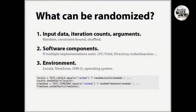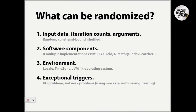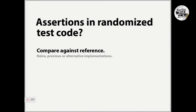Lastly, the environment — this is the most obvious thing to randomize. Randomize locale, randomize the time zone, the JVM itself — sometimes the JVM is the source of a bug that you don't know of. The operating system — if you're running on Windows, it will behave differently from other operating systems anywhere in the world. You can also add exceptional triggers like random IO problems or network problems, but these are far advanced for this talk.